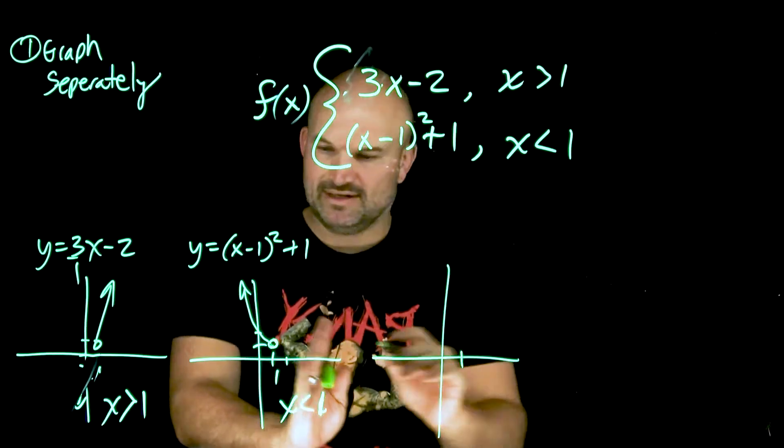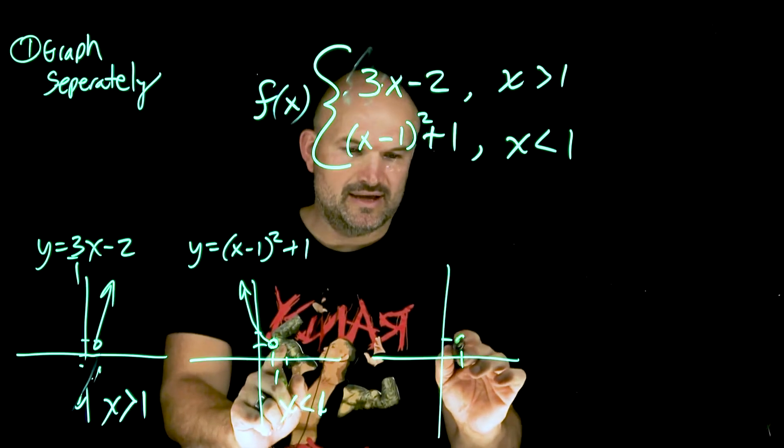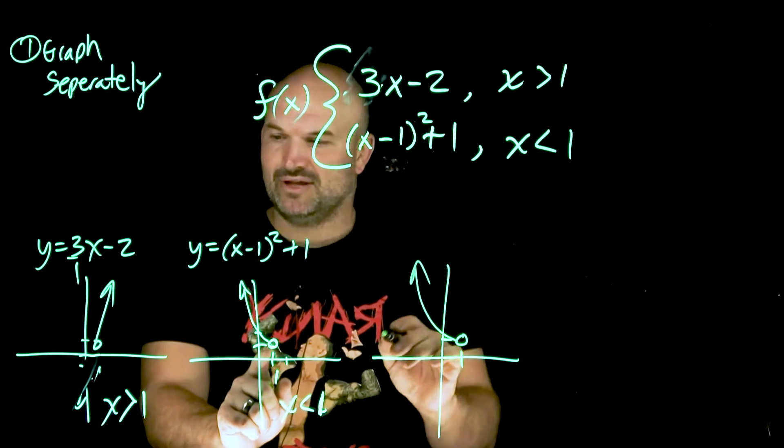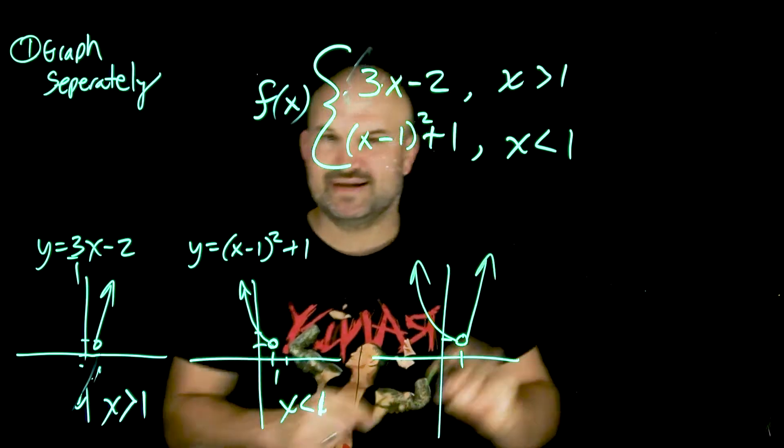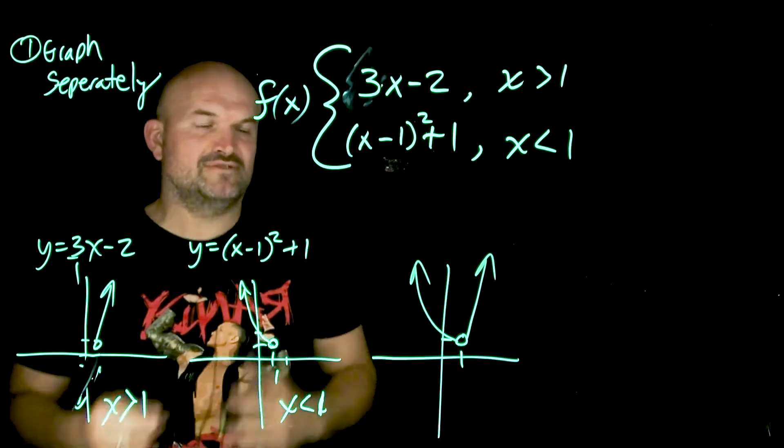So we say, all right, at 1, 1, they both have that point. It's undefined. To the left, we're going in a parabola. And to the right, we're doing a nice line. That's a great way to be able to do it, a great tip to be able to follow.